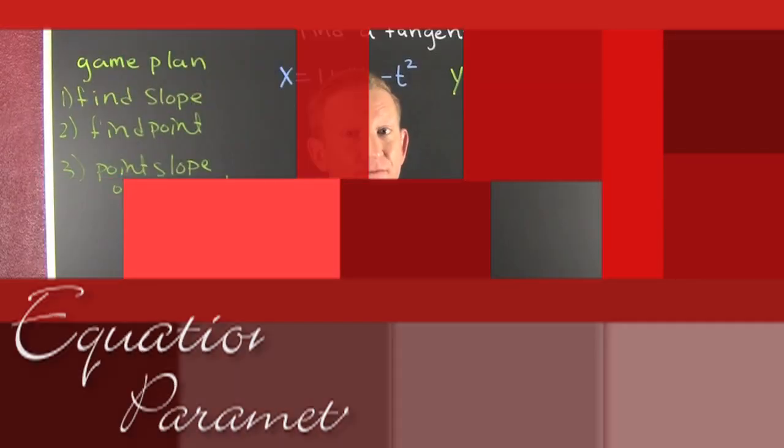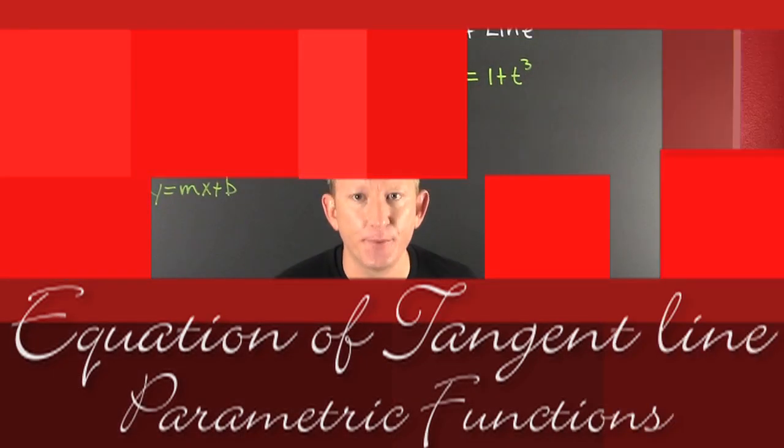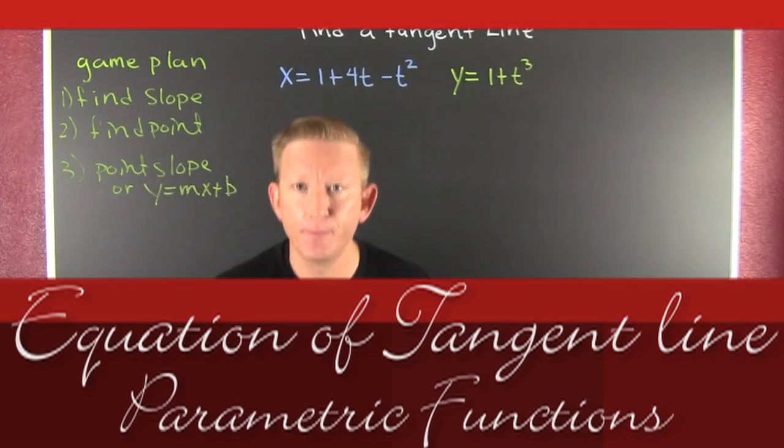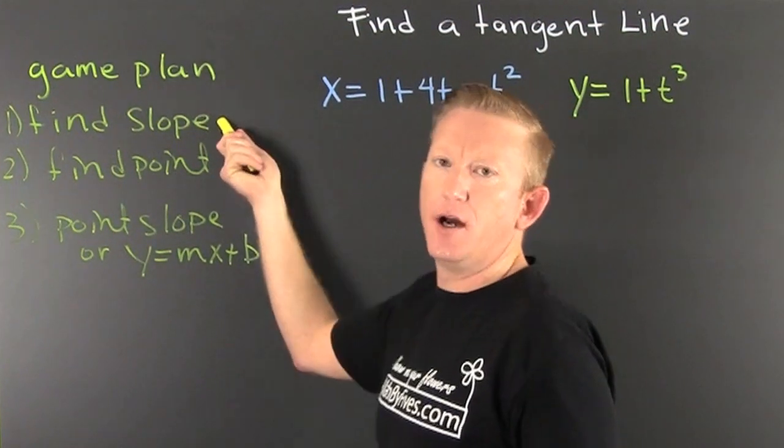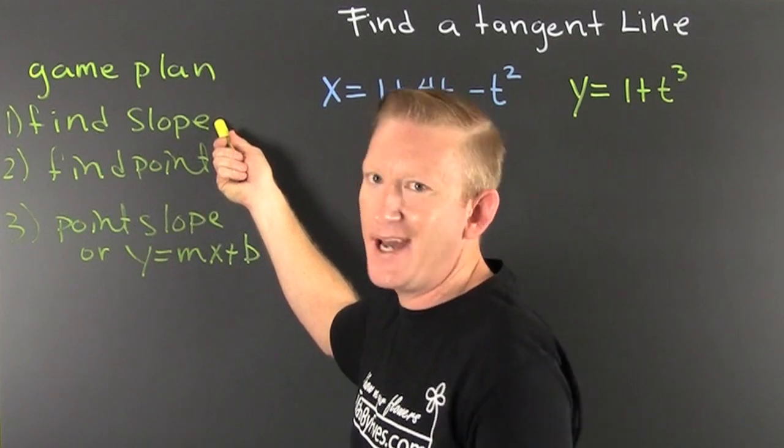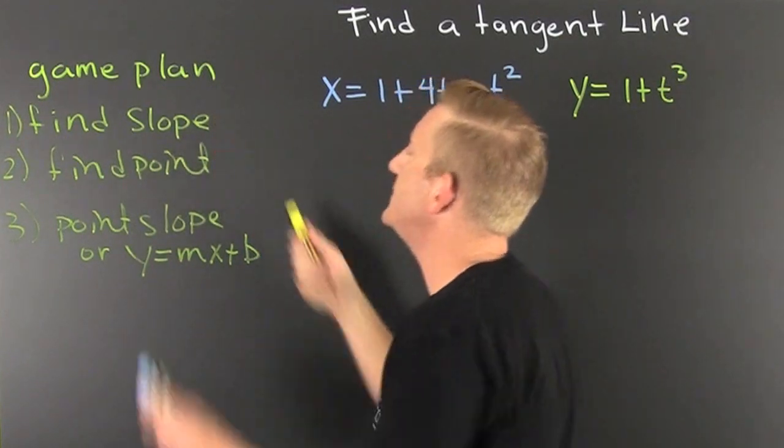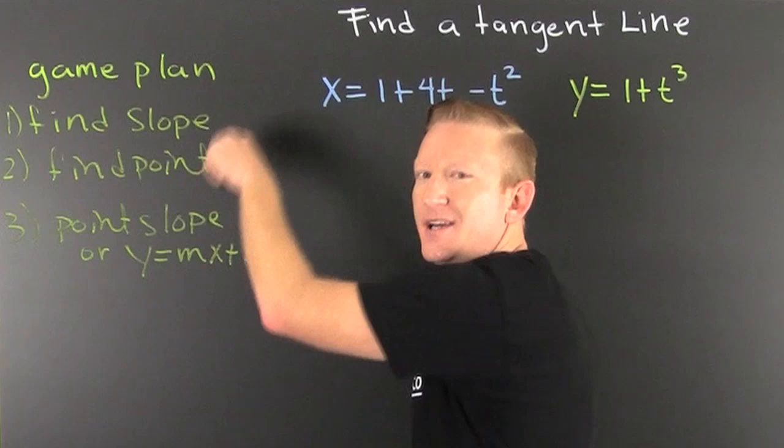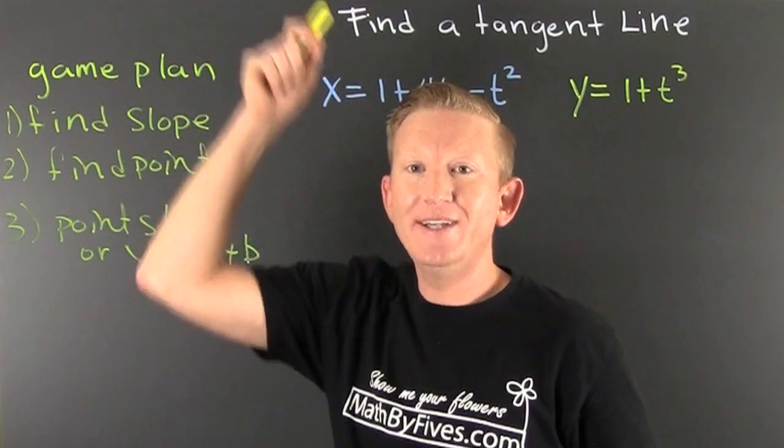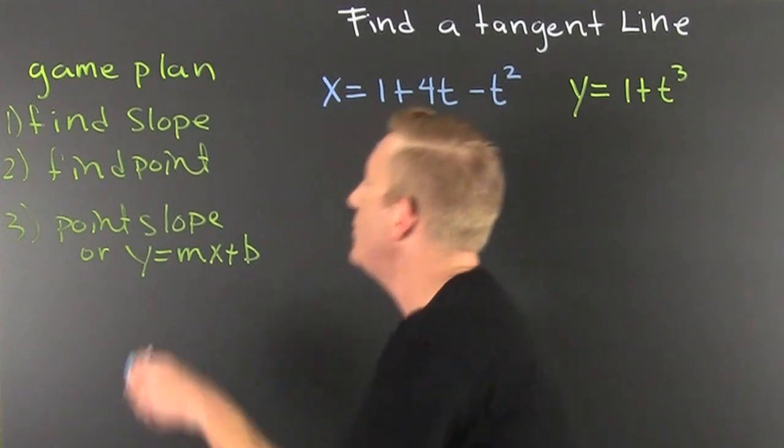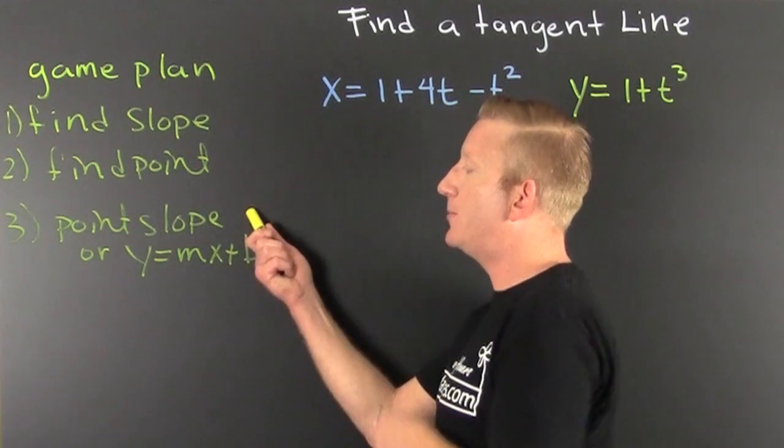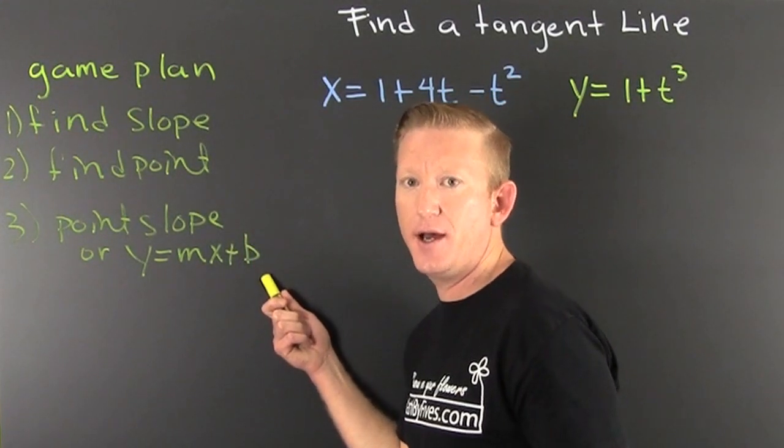We want to find the slope of a tangent line, but first, we need a game plan. One, we're going to find the slope of these parametric equations at a specific point, and then we're going to find a point, because what do we need? We need a point and a slope in order to find the equation of a tangent line. With that point and that slope, we're going to put it into point slope or y equals mx plus b.